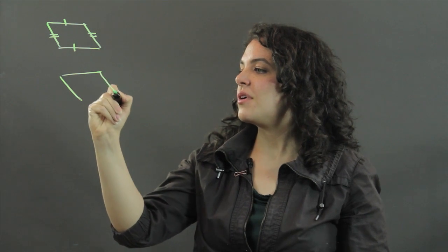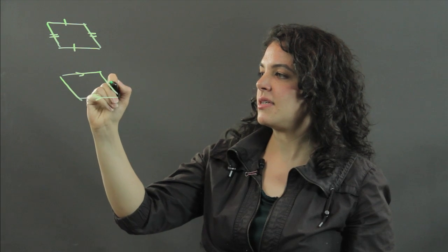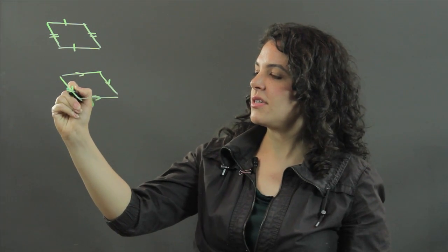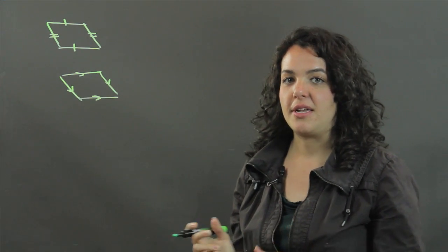Similarly, if you have two pairs of sides that are parallel and they're opposite, so this is one pair of opposite sides that are parallel, here is another pair of opposite sides that are parallel, then you have a parallelogram.